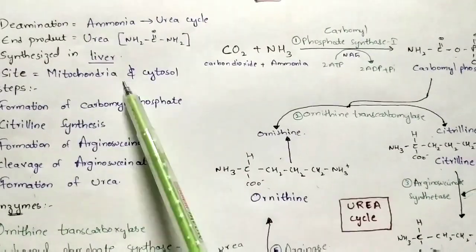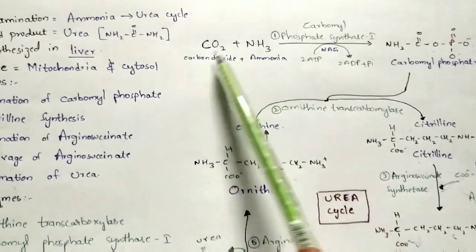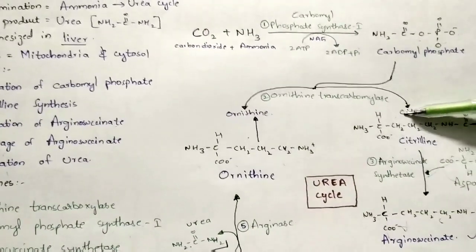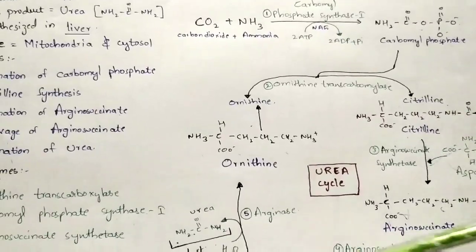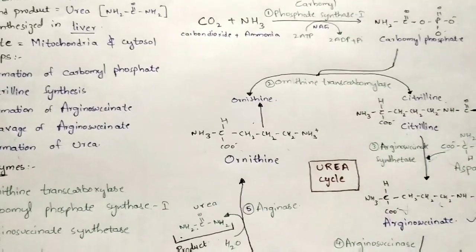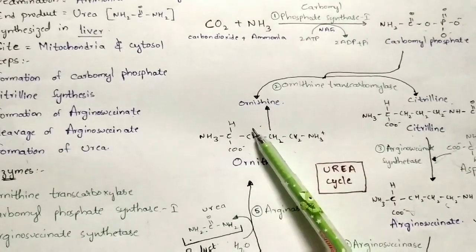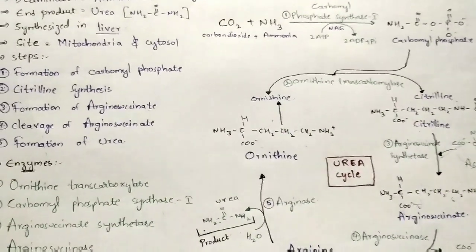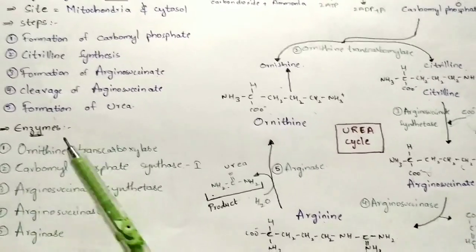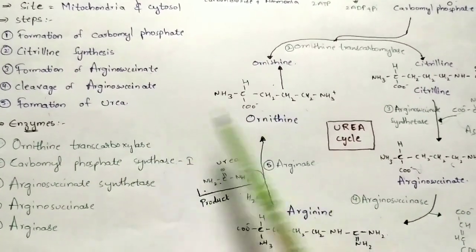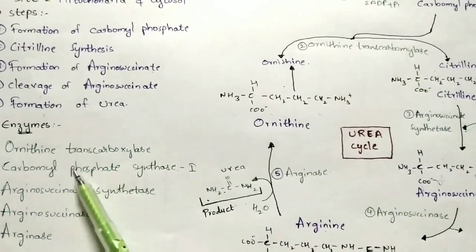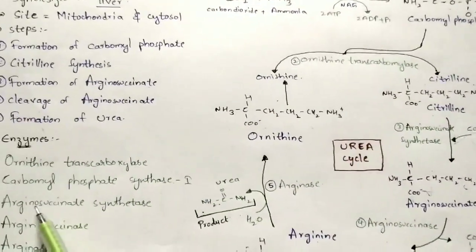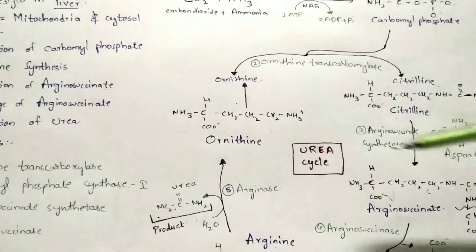Regarding compartmentalization: the first two reactions — formation of carbamyl phosphate and citrulline — take place in the mitochondria. Citrulline then enters the cytosol, where the remaining reactions occur. The ornithine product formed in the cytosol re-enters the mitochondria and the process repeats. Ornithine transcarbamoylase is the second enzyme and carbamyl phosphate synthase 1 is the first enzyme.